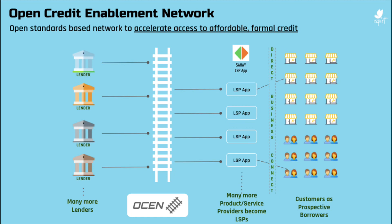When we talk about the loan process, there are multiple parties involved. We have lenders on the left side, borrowers on the right side, and fintech applications such as the Sahai app or any other lending service provider app on the Play Store or App Store. In this example, it is OCEN — Open Credit Enablement Network. OCEN is a new credit protocol infrastructure that will act as a common language connecting lenders, who are banks or NBFCs, and marketplaces being created by fintech applications.